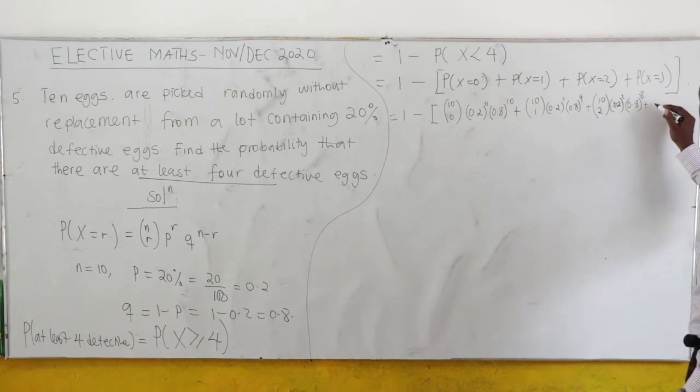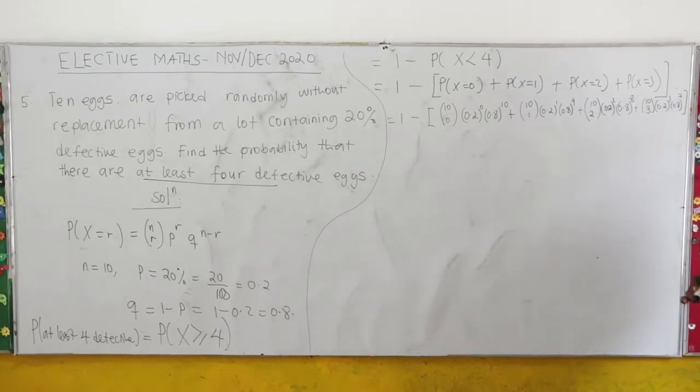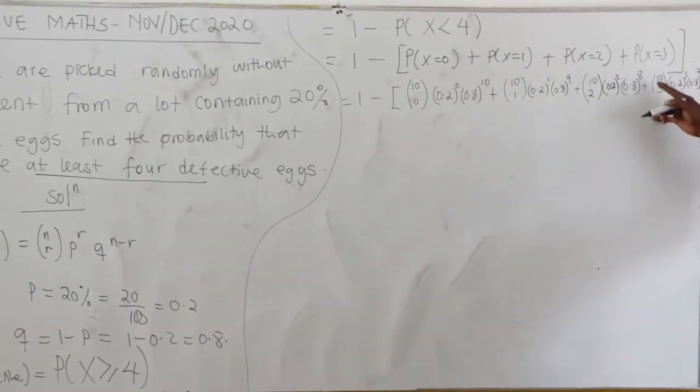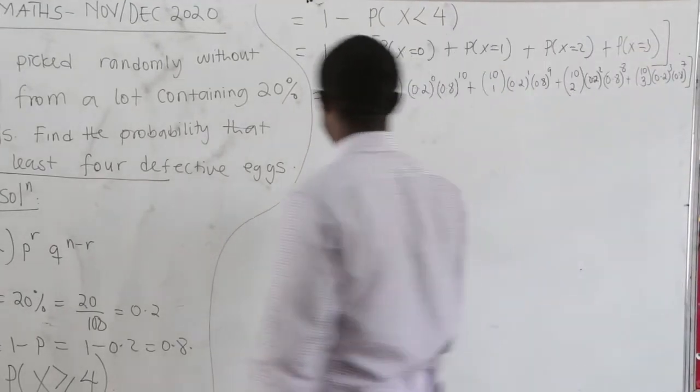Then when r = 3, we have 10C3, p = 0.2 to the power of 3, q = 0.8 to the power of 7. Why to the power of 7? Because 10 minus 3 is giving us 7.